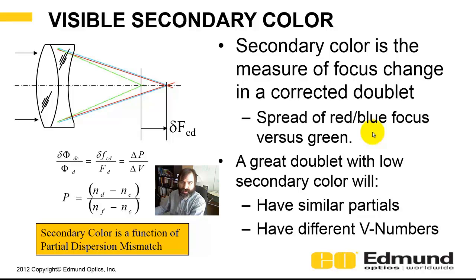So how do you predict secondary color in an achromat? It's actually very simple. The difference from the green to the wavelength extreme focus, that delta power divided by power, it's equivalent to the focal length divided, the delta focus divided by the focus. I think there's actually a negative sign between these. But it's proportional to delta partial dispersion divided by delta V, or delta Abe number. And so for a really good doublet, or a good doublet that has low secondary color, you're going to have similar partials, and you're going to have radically different Abe numbers.